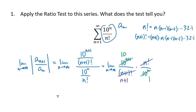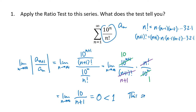So now we have the limit as n goes to infinity of 10 on the top divided by (n+1) on the bottom. As n goes to infinity, that's going to go to 0. And what the ratio test says is that because this ratio was less than 1, this series absolutely converges.